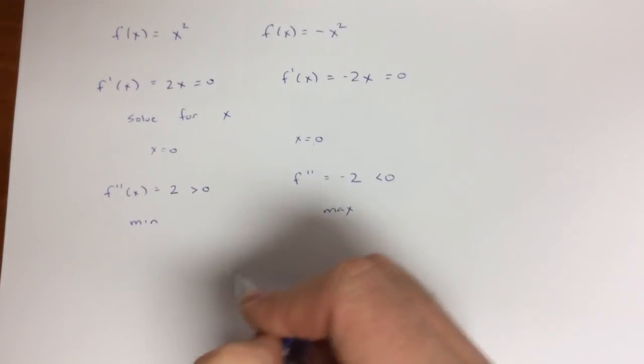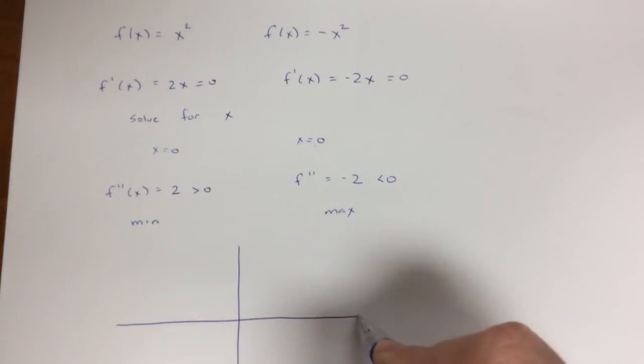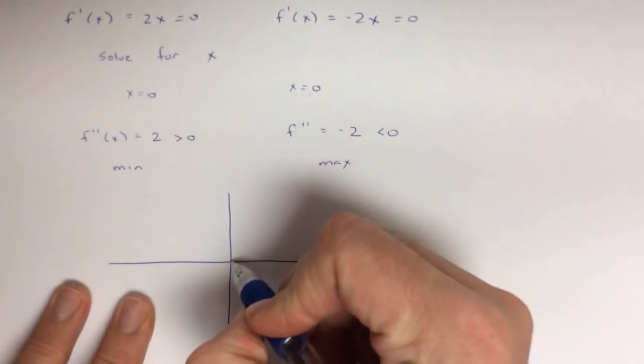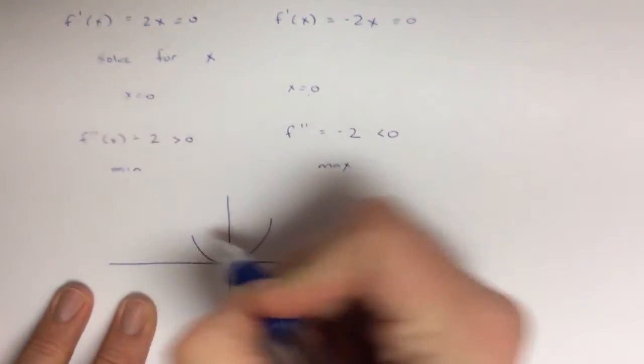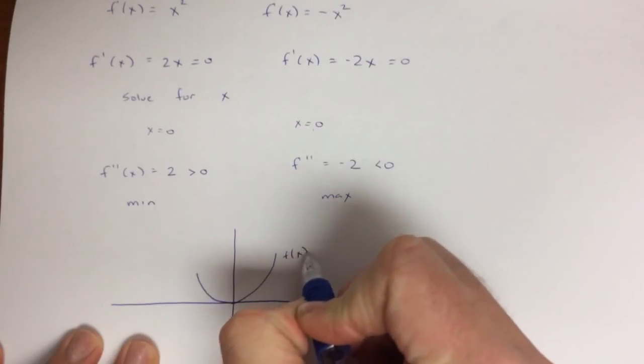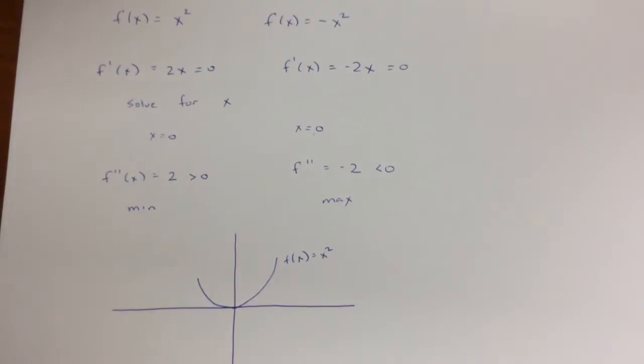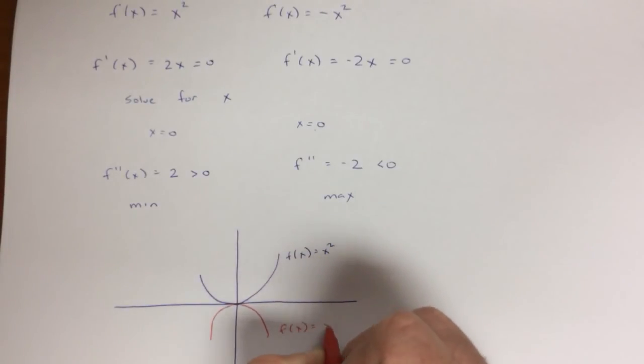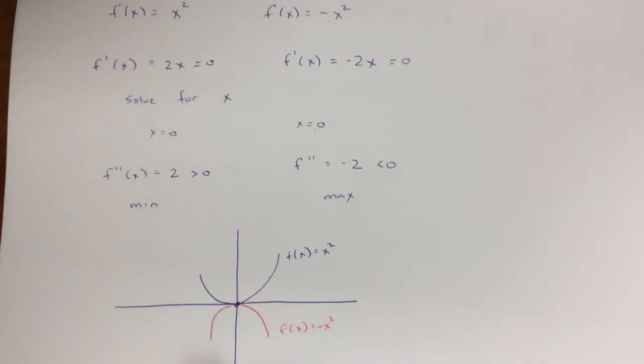x squared. So if I draw out a Cartesian plane or a graph, x squared looks like this. And negative x squared looks like this. Both of them are optimized right here at zero. But for this function, that's a minimum. For this function, that's a maximum.